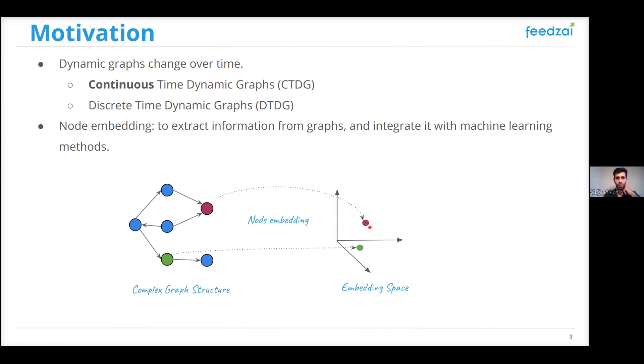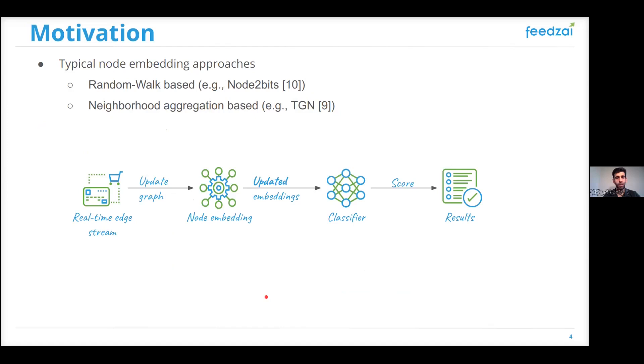Typical node embedding approaches can be divided into two main categories, either random walk-based or neighborhood aggregation-based. To deploy such methods in a production environment, a pipeline like this one needs to be considered. Starting from a stream of edges, for instance, in the financial domain, assuming a graph where nodes are accounts and edges are transactions between these accounts.